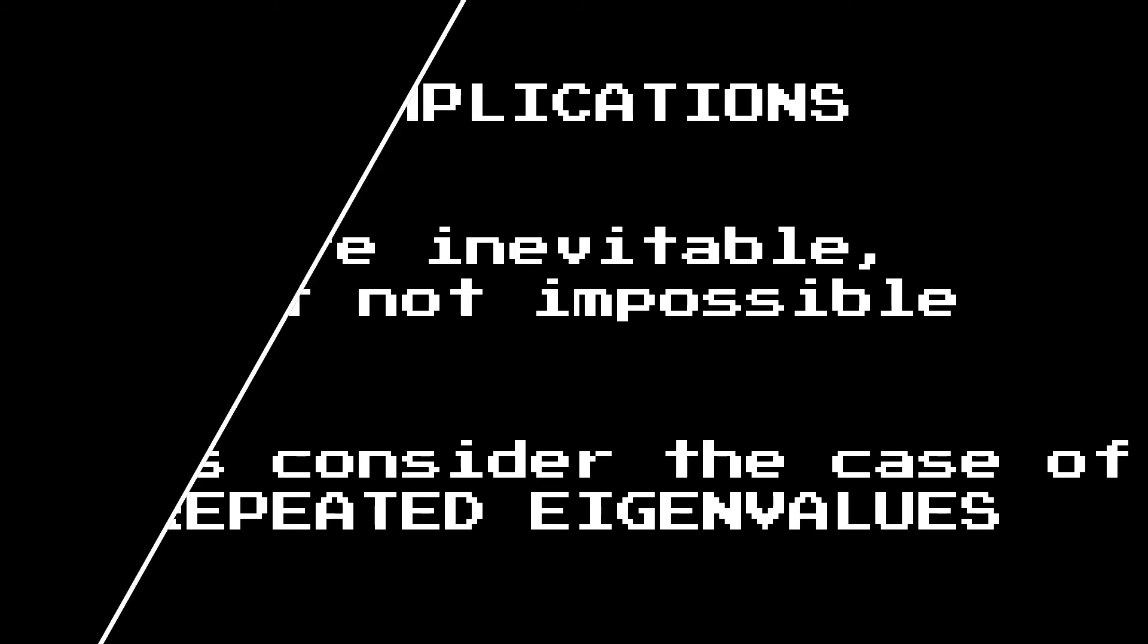Things can get a little more complicated when it comes to computing eigenvalues and eigenvectors. Let us first consider the case of repeated eigenvalues. Repeated eigenvalues can come about in a number of different ways. Let's look at a few examples.